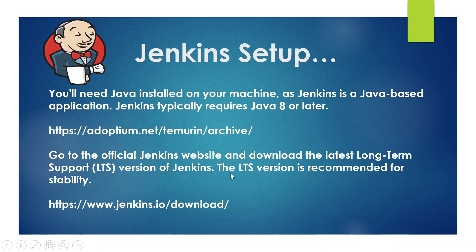I would suggest you install the latest version of Java from this site — that could be OpenJDK 11, OpenJDK 17, or 21 — just make sure it is more than Java 8, because you are going to install the latest version of Jenkins. Then we will go to the site to download the Jenkins binary.